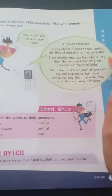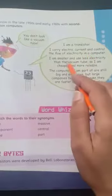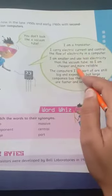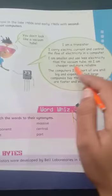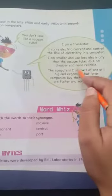I am smaller and use less electricity than the vacuum tube. So I am cheaper and more reliable. That's why I am cheaper and reliable.